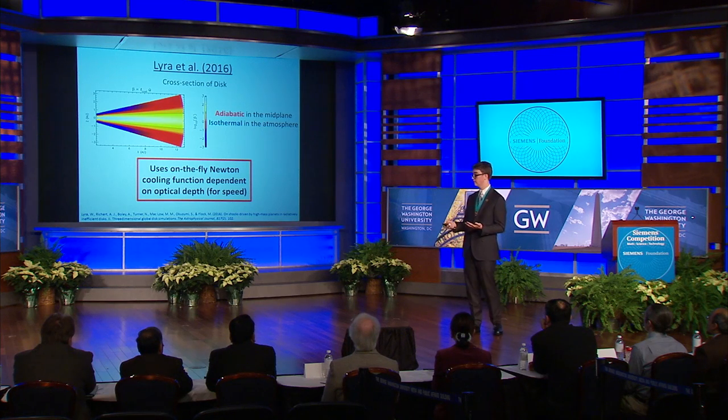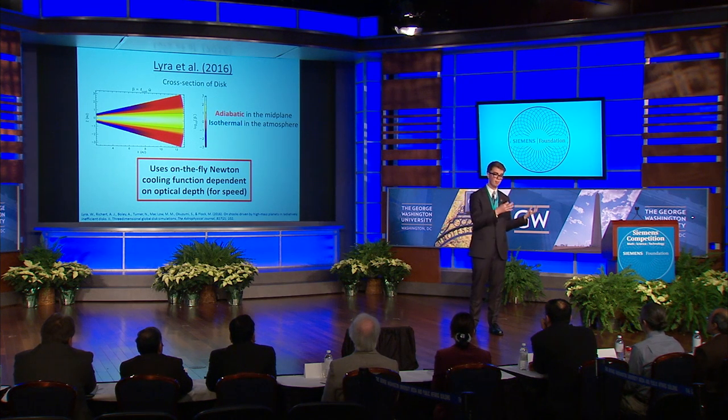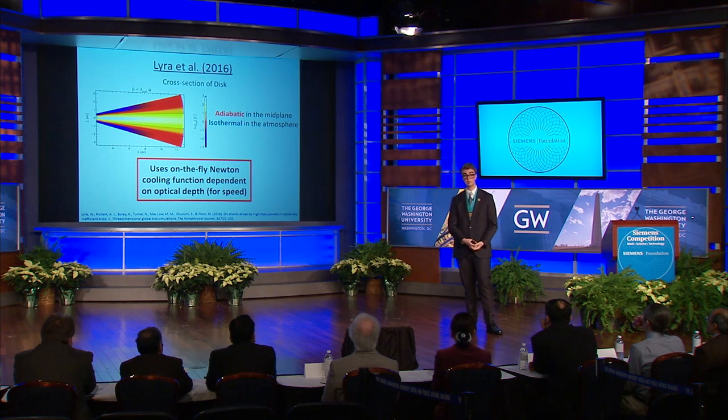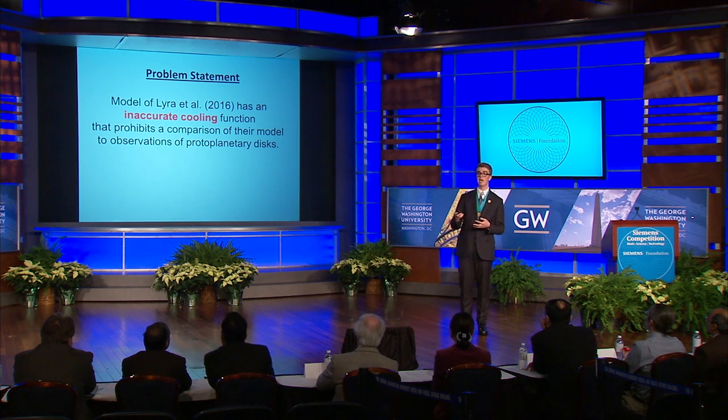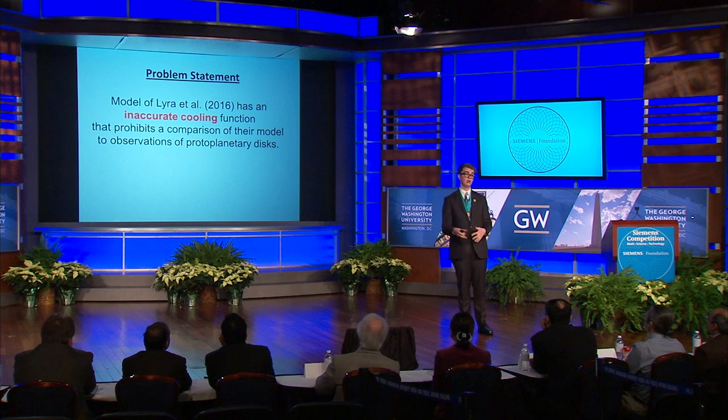Conversely, the atmosphere cooled very quickly, releasing all of its heat into the space around it. This is because they used an on-the-fly Newton cooling function dependent on the optical depth of the disc — an approximation that is not entirely realistic, though it is close. It was done because it is a very computationally expensive 3D hydrodynamic simulation. The problem then is that the model of Lyra et al. 2016 has an inaccurate cooling function that prohibits a comparison of their model to protoplanetary discs.